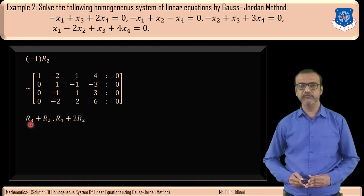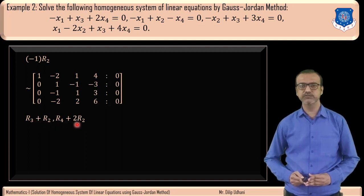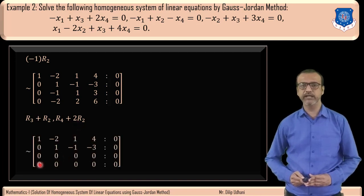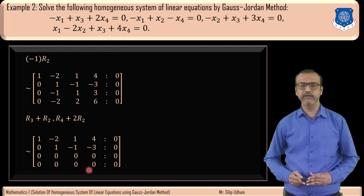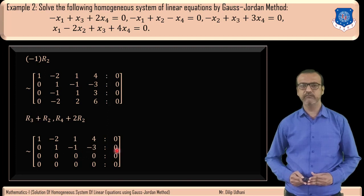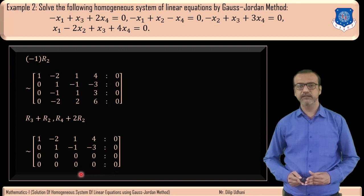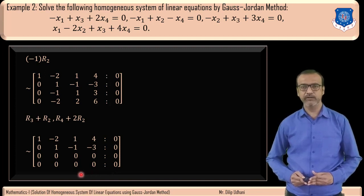Now we apply R3 + R2 and R4 + 2R2 to make elements below the leading 1 in column 2 equal to zero. Row 1 and row 2 remain as is; row 3 and row 4 become zero rows. The resultant matrix is: row 1: [1, -2, 1, 4 | 0]; row 2: [0, -1, 1, 3 | 0]; rows 3 and 4 are zero rows. We also multiply row 2 by -1 to make the leading element 1: row 2 becomes [0, 1, -1, -3 | 0]. This is the row echelon form.